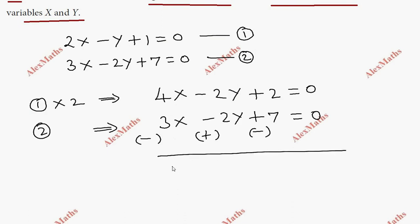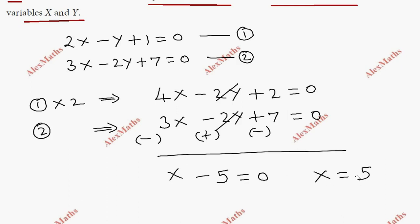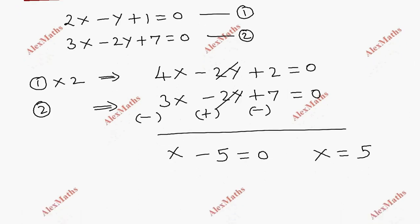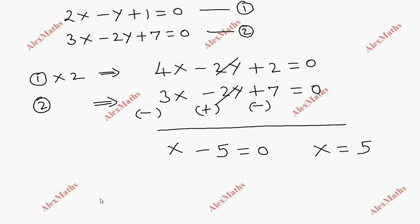Subtracting: 4x - 3x gives x. The -2y and +2y cancel. This gives 2 - 7, which is -5 = 0. So the x value is 5.